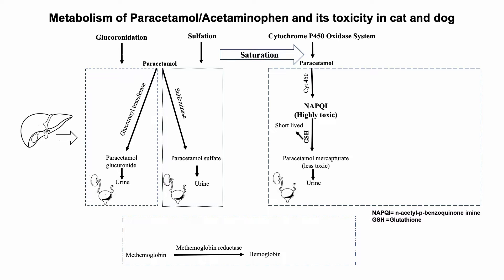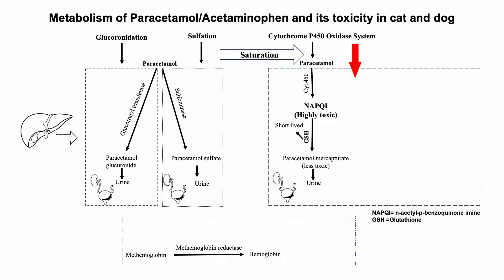The second major pathway is the sulfation pathway, where around 40 percent of paracetamol is metabolized to non-toxic paracetamol sulfate, also excreted in the urine. When these two pathways are saturated and unable to convert the high amount of paracetamol to non-toxic metabolites, the third minor system — the cytochrome P450 oxidase system — activates and converts around 5 to 9 percent of paracetamol to NAPQI, which is a highly toxic metabolite.